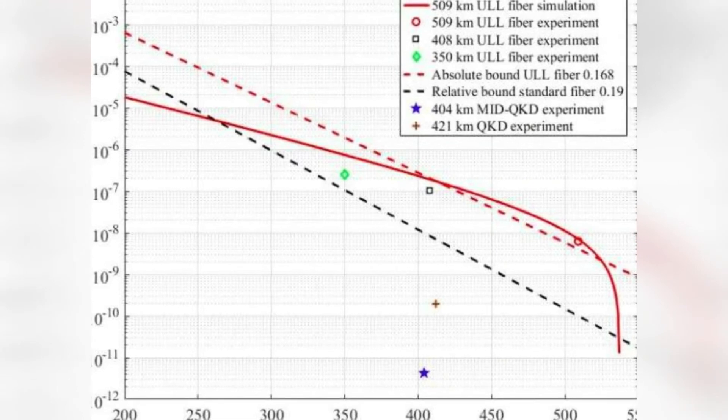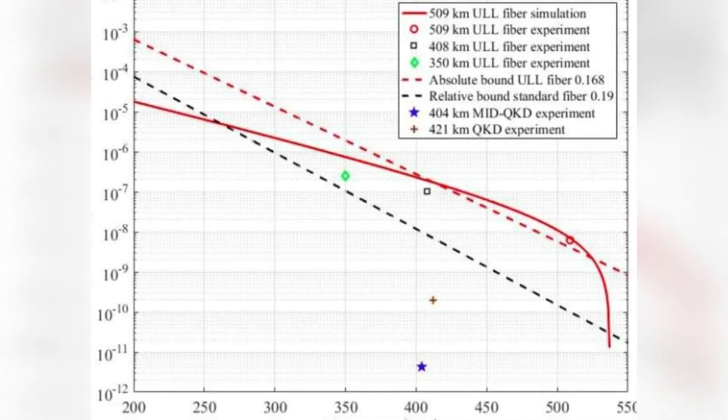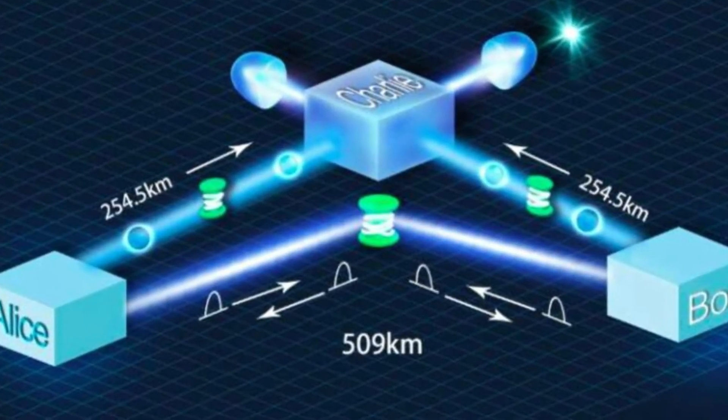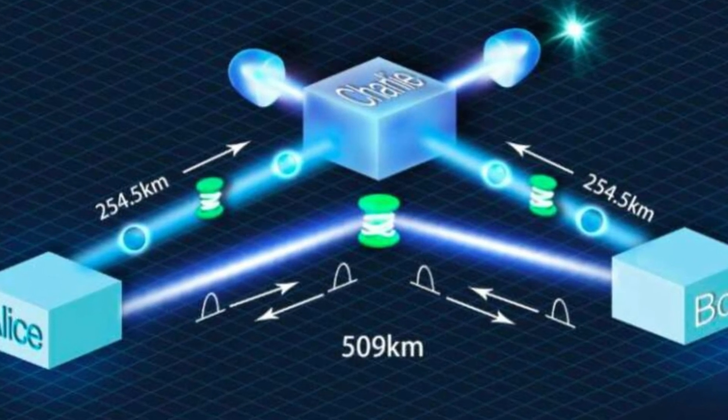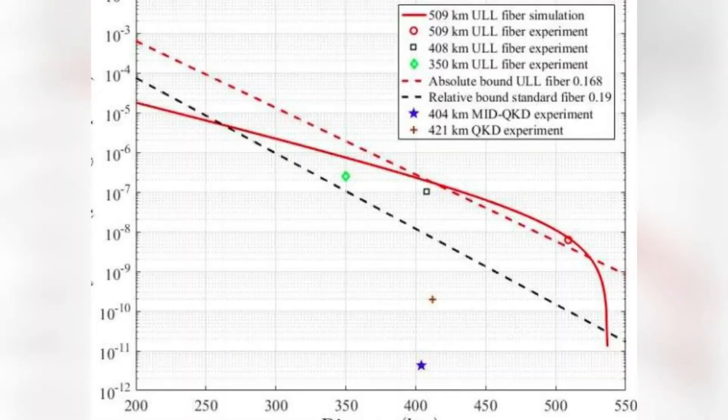We experimentally provided a new record for fiber QKD transmission distance and demonstrated that it breaks the absolute key rate limit of repeaterless QKD, Zhang said. In our future research, we plan to explore higher key rate and longer distance.